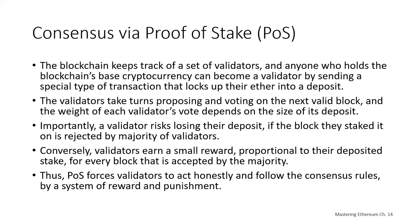Conversely, validators earn a small reward proportional to their deposit stake for every block accepted by the majority. Therefore, proof of stake forces validators to act honestly by a system of reward and punishment — if they do well, they get a small reward; if they do badly, they get a big punishment. The major difference between proof of stake and proof of work is that the punishment in proof of stake is intrinsic to the blockchain — i.e., the loss of staked Ether — whereas in proof of work, the punishment is extrinsic: the loss of funds spent on electricity if you don't get a corresponding reward.